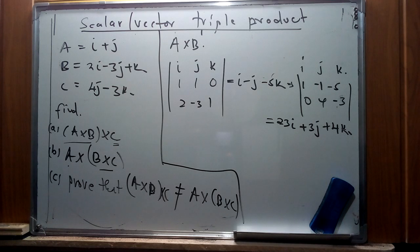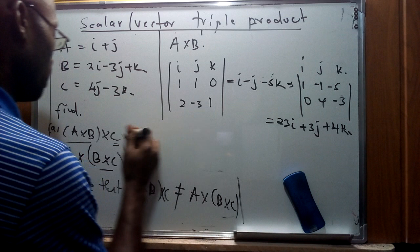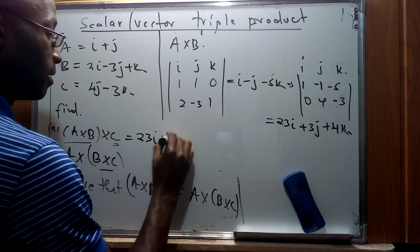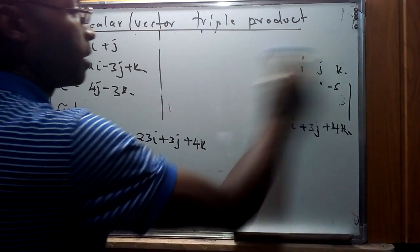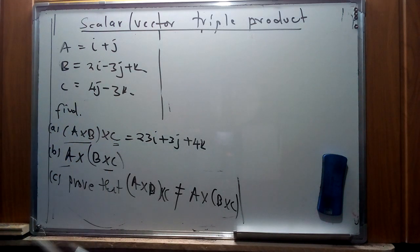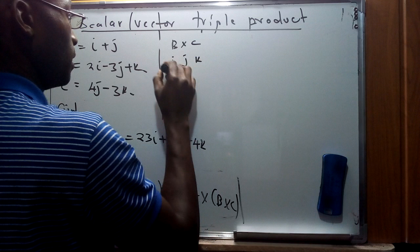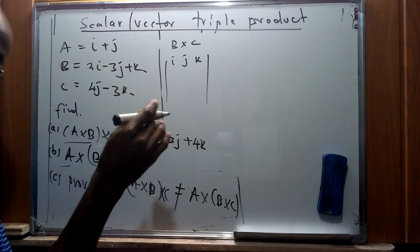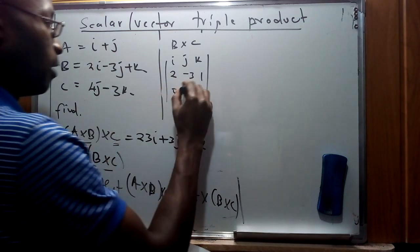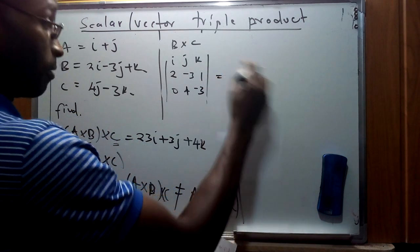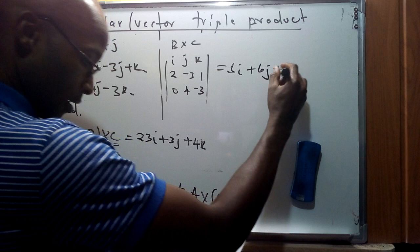Next we look at a × (b × c), which is part two. First we find b × c. Setting up the determinant for b = (2, −3, 1) and c = (0, 4, −3), this gives b × c = 5i + 6j + 8k.